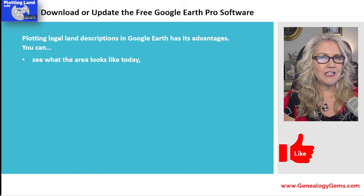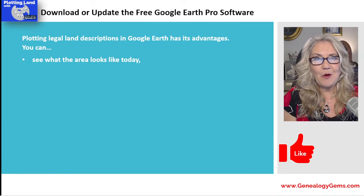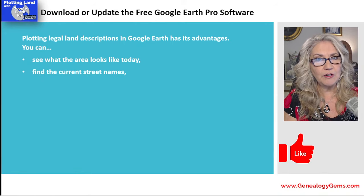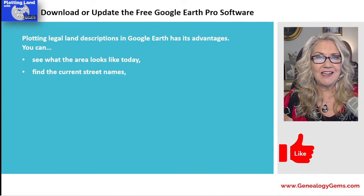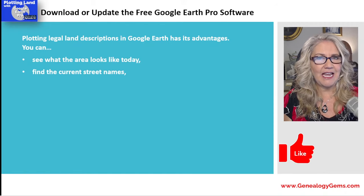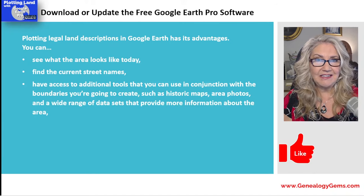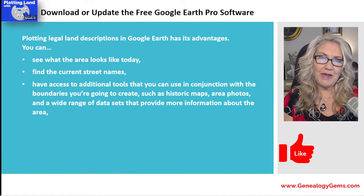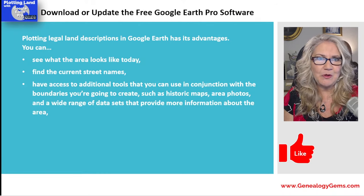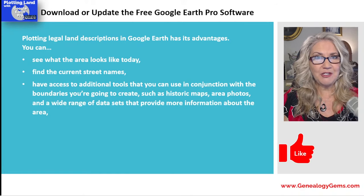Plotting legal land descriptions in Google Earth has a lot of advantages in the software program. You can see what the area looks like today, which is particularly useful for those of us working with addresses from long ago — perhaps a homestead of our ancestor. We want to see what that location is today, and we also want to be able to convert a legal land description into the current street address. You can also access additional tools like historic maps, area photos, and a wide range of data sets.